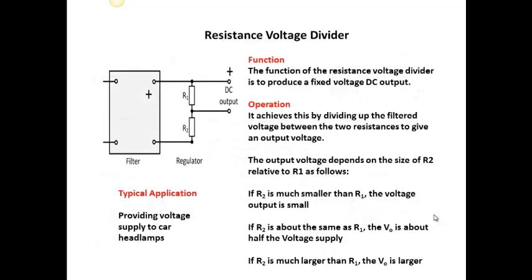The simplest one is just two resistors on the output, with the DC output across one of those resistors. If we had say 12 volts here and we have two resistors at the same value, we'll get six volts out. We can chop up or distribute this voltage using these resistors — this would be a very crude voltage supply, something like feeding voltage to car headlamps. Changing the size of R1 will change the output voltage; if we make R1 bigger than R2 we'll get a bigger voltage out of R1.